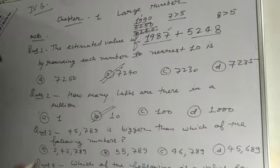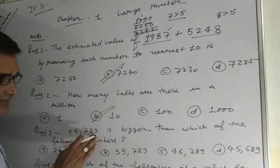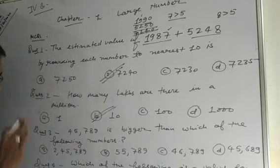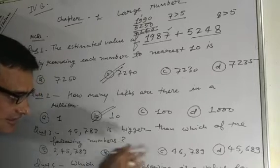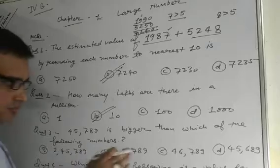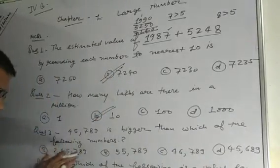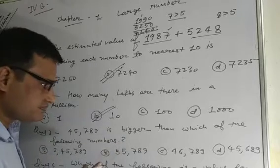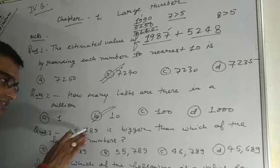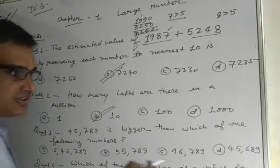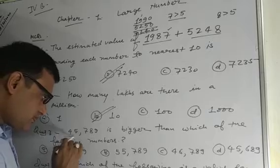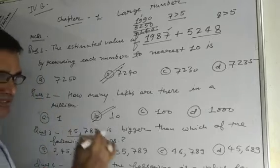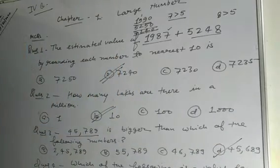Question number 3. 45,789 is bigger than which of the following numbers? The options are 25,789; 55,789; 46,789; and 45,689. Options A, B, and C — that is 25,789, 55,789, and 46,789 — are not all less than 45,789. Checking option D, 45,689 is less than 45,789. Therefore, 45,789 is bigger than 45,689, so option D is the correct answer.